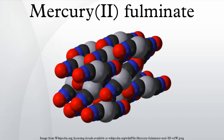Mercury fulminate is prepared by dissolving mercury in nitric acid and adding ethanol to the solution. It was first prepared by Edward Charles Howard in 1800. The crystal structure of this compound was only determined in 2007.